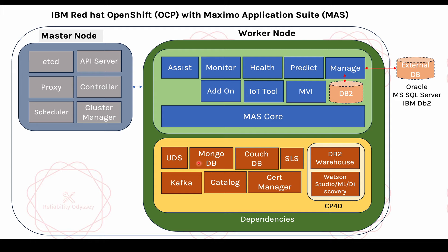The next one is MongoDB. MongoDB is where Maximo Application Suite keeps its data dictionary, and all user management also happens at MongoDB. User creation happens at the MAS Core level and that data is stored in MongoDB. Then you have CouchDB, which is used with Maximo Assist. It is a NoSQL-based document type of database.